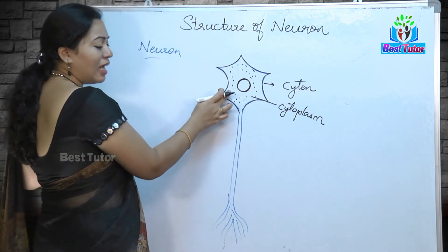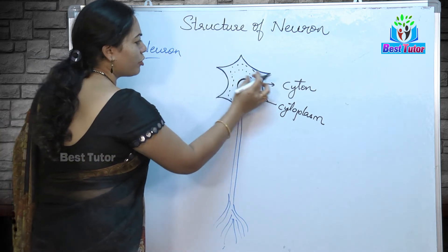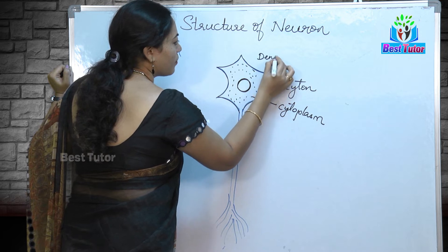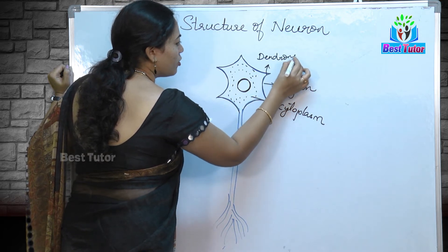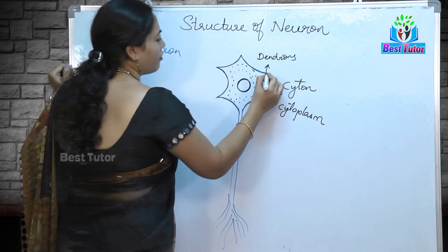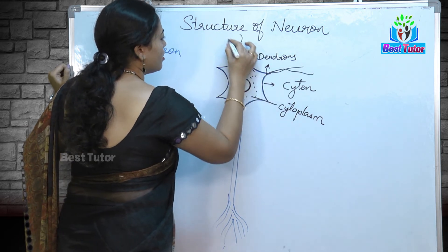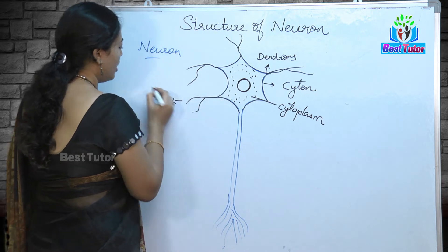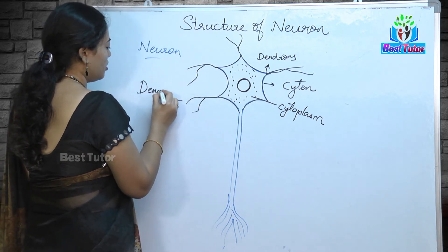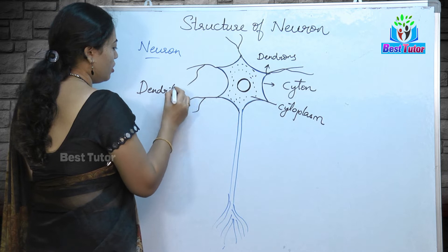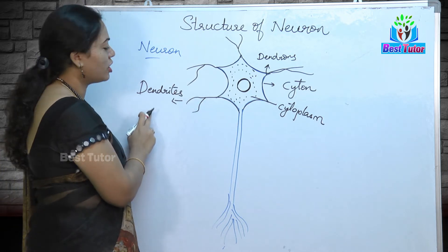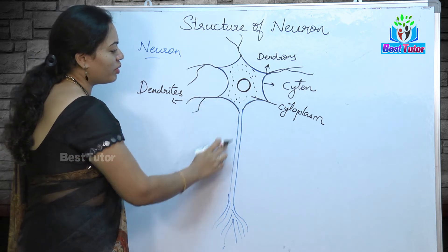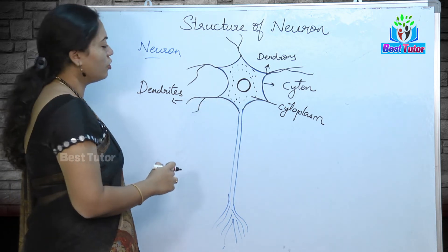The cell body cytoplasm shows some projections which we call dendrons, and these dendrons further branch into finger-like projections known as dendrites. These dendrites are the ones which are going to receive the stimulus impulse, and that impulse is going to be carried throughout the neuron structure.